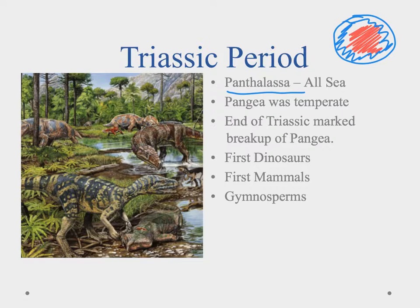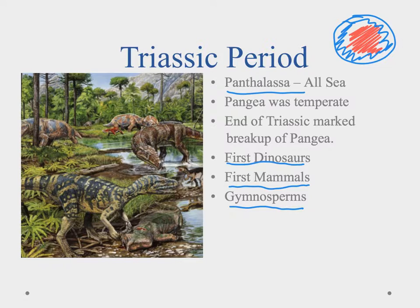In the Triassic Period, remember we had just had a mass extinction, so all these different animals were now exploring and exploiting new niches. That's when we start to see the first dinosaurs. We also saw the first mammals, which were small, rodent-like creatures. And we also started to see gymnosperms — these seeded plants, like pine trees and things of that nature.